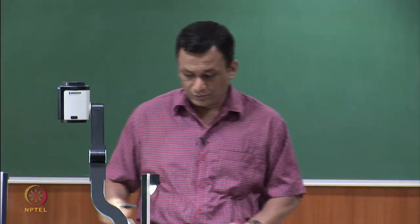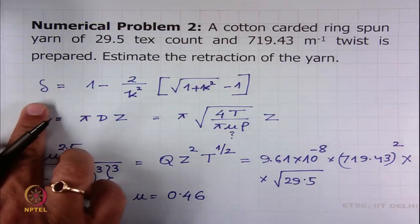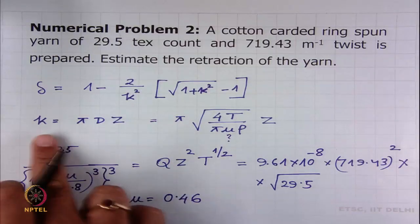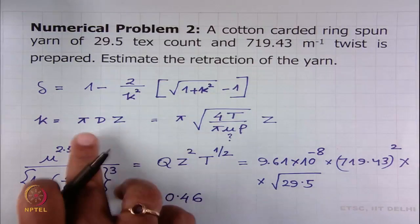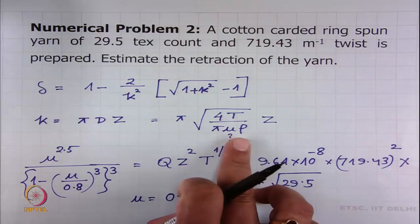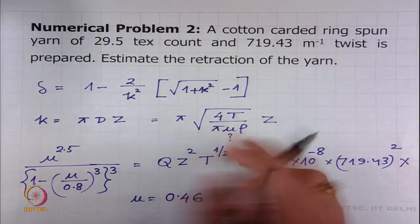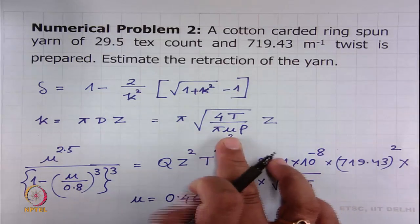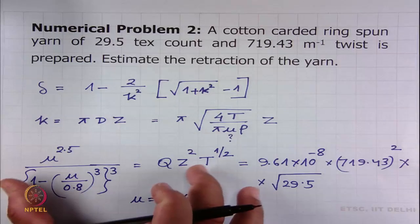To summarize what we did: yarn retraction equals the expression where κ = π × d × z (yarn twist intensity), and d = square root of (4T / π μ ρ). In this expression, capital T is given, ρ is given, z is also given, but μ is not given. So we determine μ from the expression learned in module 3.